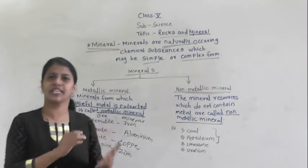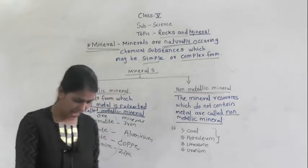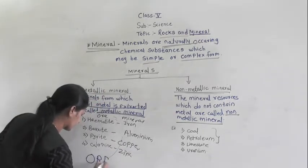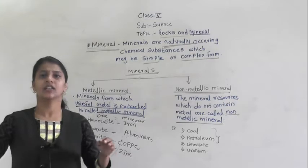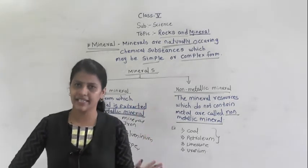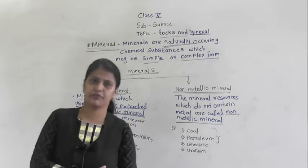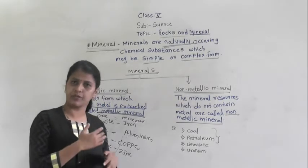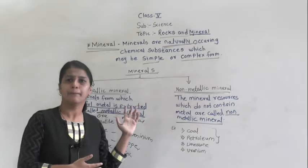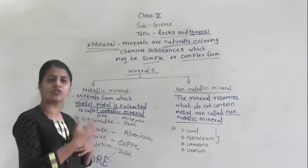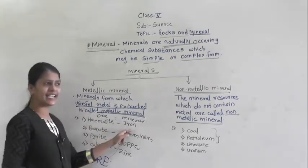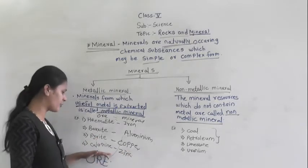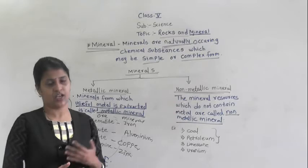The minerals from which we get metals are called ores. For example, hematite, bauxite, pyrite, and calamine are ores because we get metals from them. From hematite we get iron, from bauxite we get aluminium, from pyrite we get copper, and from calamine we get zinc.